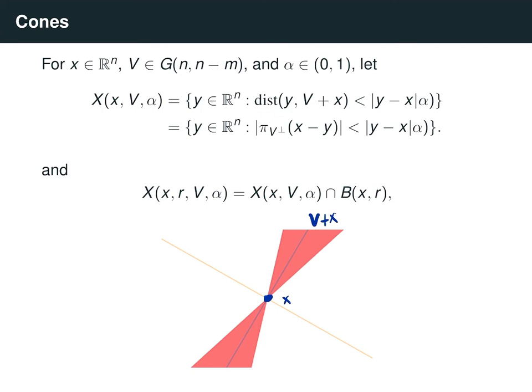Here I've illustrated what this cone looks like. If this is the center of the cone x, and this blue line is the axis v plus x, we see that as we move away from the point x, the most that any point inside the cone is allowed to be away from v plus x grows at a rate alpha. The smaller that alpha is, the tighter this cone is around the axis v plus x — you can almost think of alpha as the width of this cone.